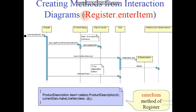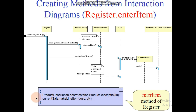Next is creating methods from interaction diagrams. We know that sequence diagrams are a type of interaction diagram. Here we have a register object sending the enterItem message. Further messages go to the next object and so on up to line item. The enterItem method of register has the first statement: productDescription desc equals catalog.getProductDescription(id), then currentSale.makeLineItem(desc, qty).